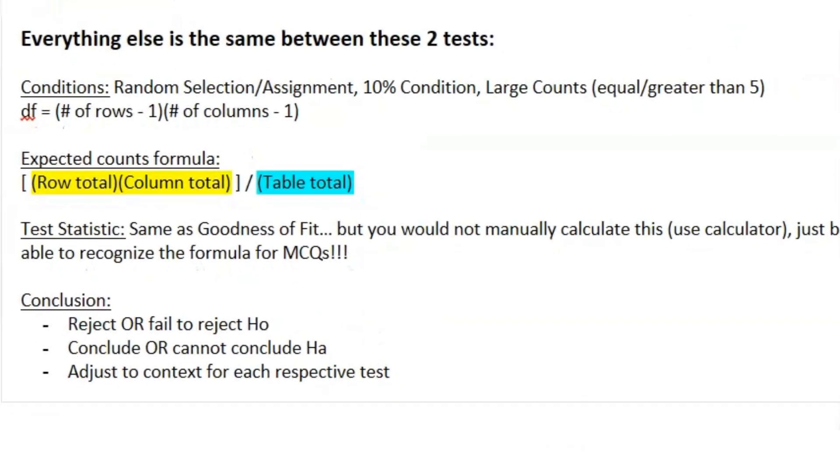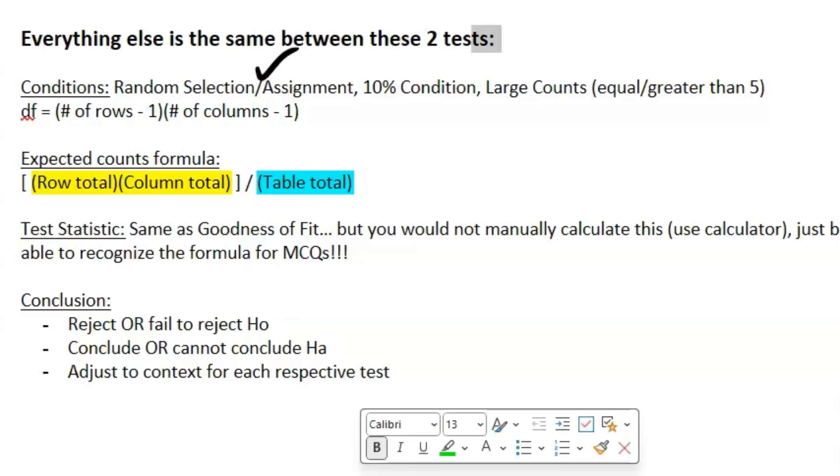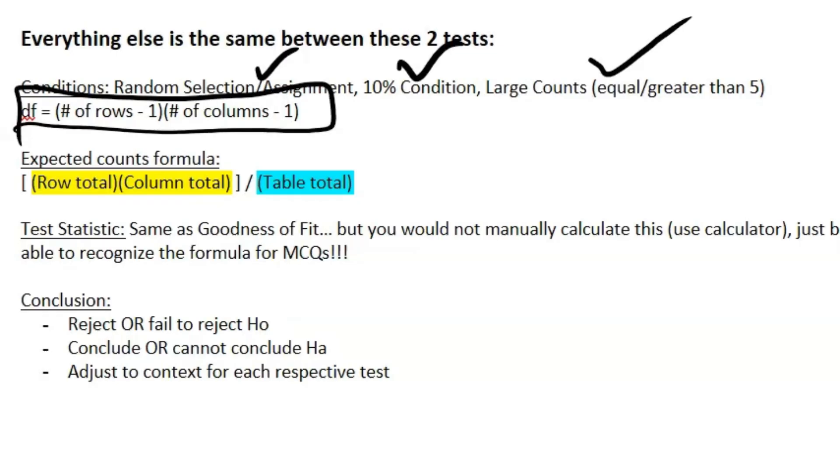Now like before, we're going to go into our assumptions and conditions: you've got to have your random sample and selection assignment, your 10% condition, your large counts equal to or greater than five. And then this is a little different for your degrees of freedom: it is now the number of rows you have minus one times the number of columns you have minus one.